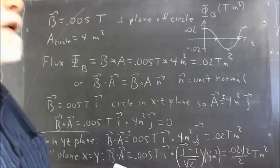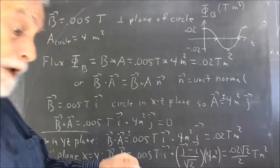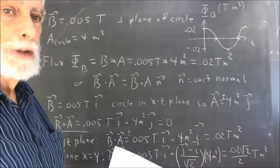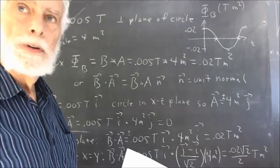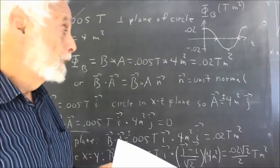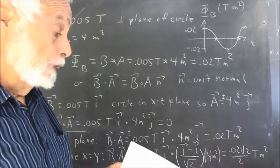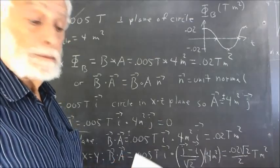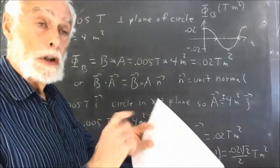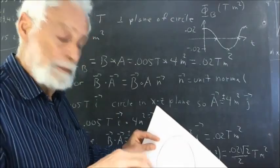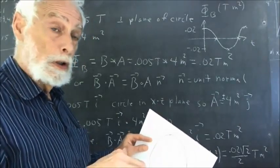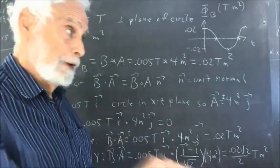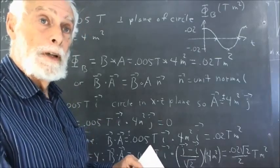We want to talk about magnetic flux. The rate of change of the magnetic flux in a loop is equal to the EMF or voltage produced around the loop. We've seen this with a magnet and a coil of wire. Can we manipulate the magnet in front of the coil in such a way that the amount of magnetic field going through the coil varies?